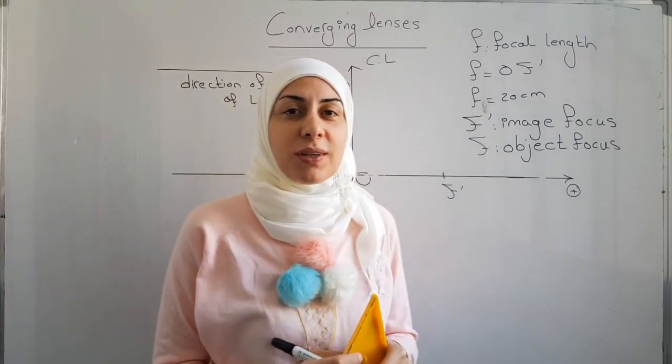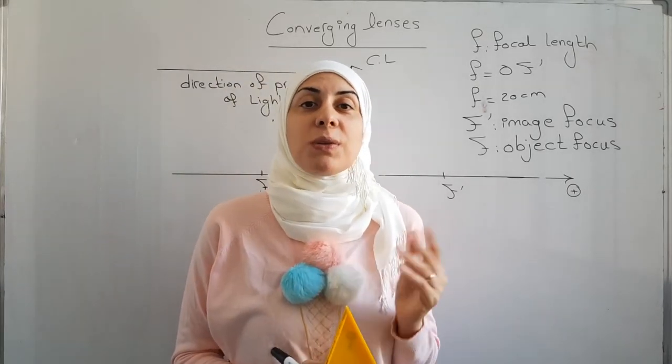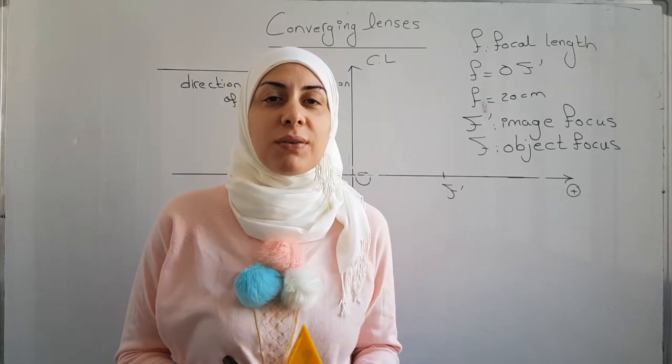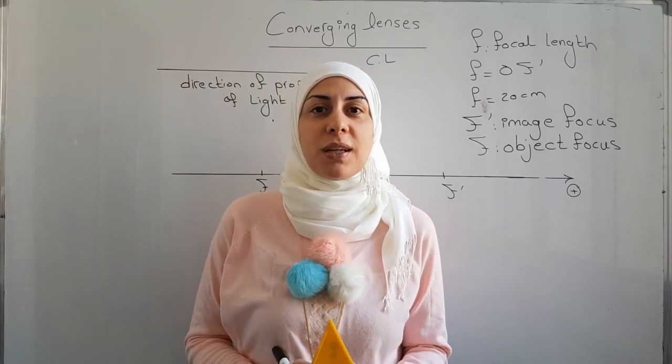This is the object focus F. So F and f prime are symmetric relative to O, and once you know one of them you can locate the other one directly. After saying that, let's move to the three particular rays that pass through the converging lens.